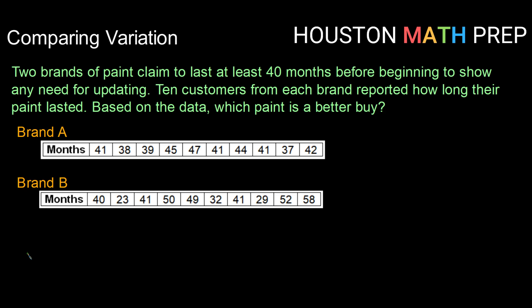Now the first question you might think of is what's the average number of months that each one lasted? And it turns out that actually both have about the same average lifespan. So brand A had a mean of 41.5 months and brand B had a mean of 41.6 months. So overall not super different.